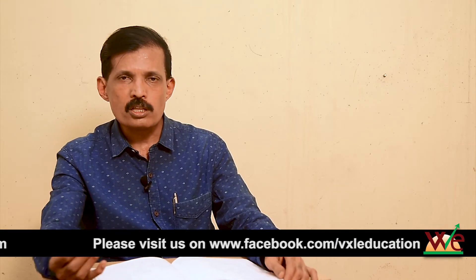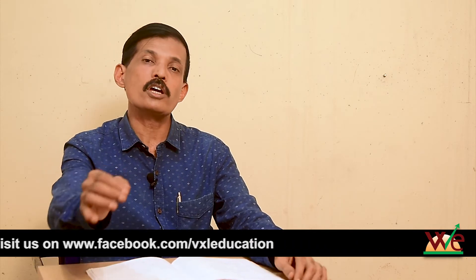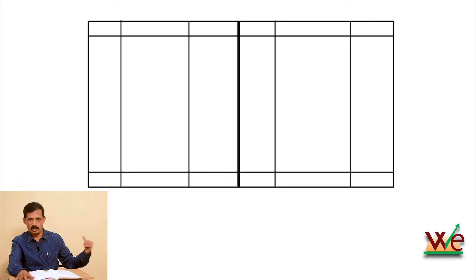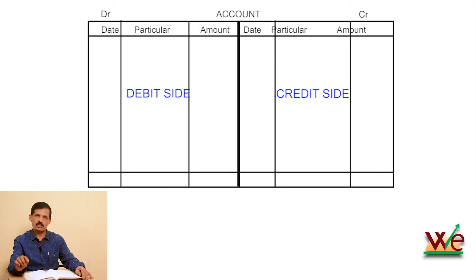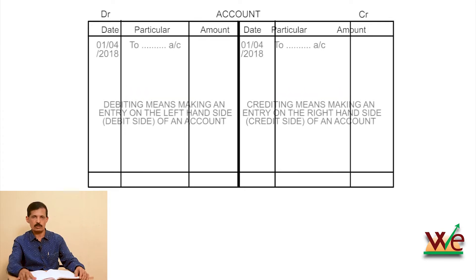If you are talking about accounting, what is the double entry principle? What is the balance sheet? An account comes in a T-shape — a simple format. An account has a left-hand side for debit and a right-hand side for credit. If you make an entry on the left-hand side, that is a debit. If you make an entry on the right-hand side, that is a credit.